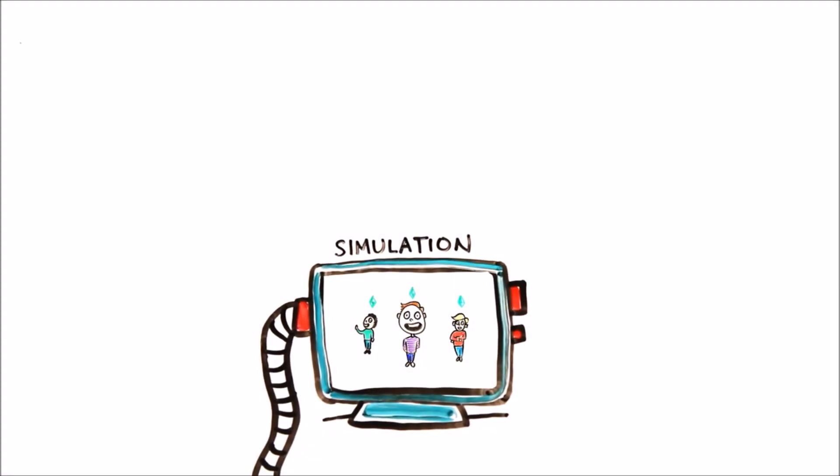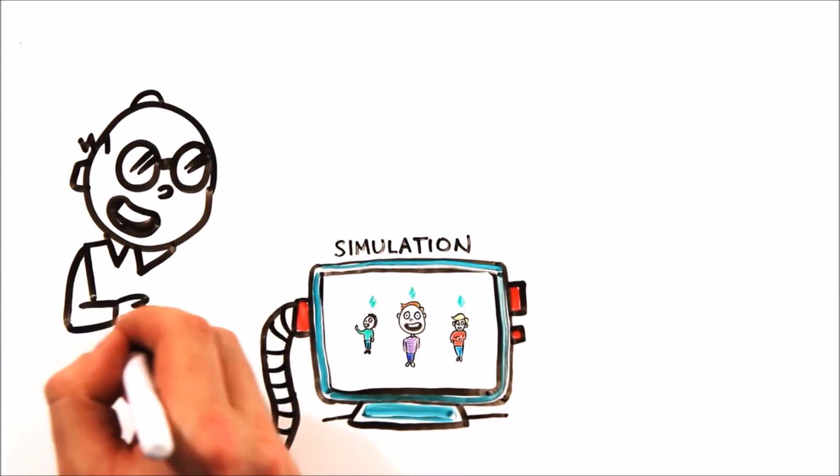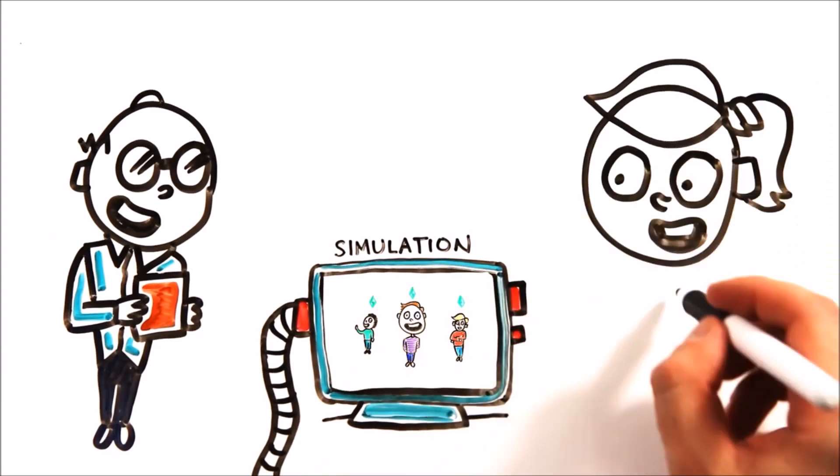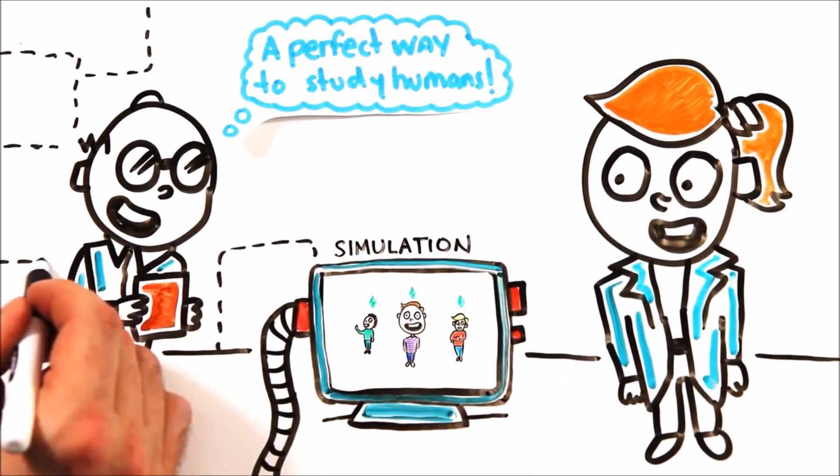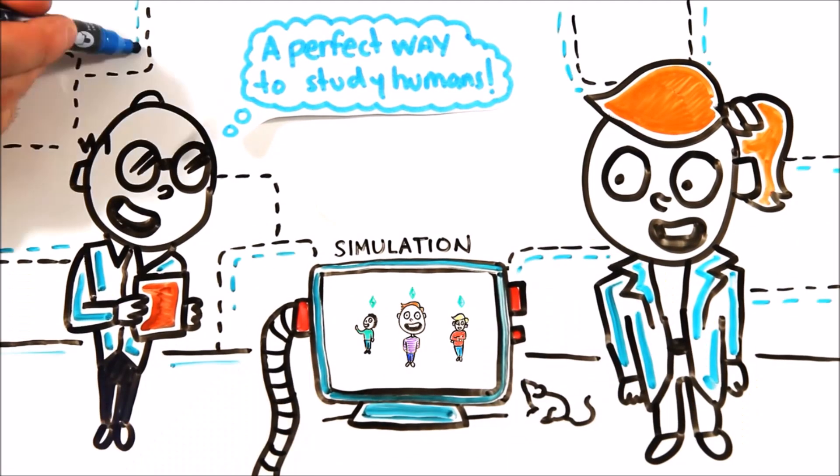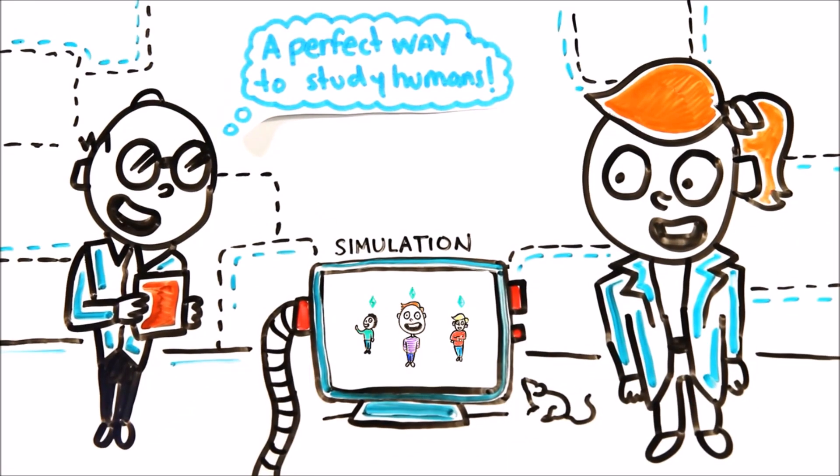As technology advances, it's almost a certainty that future humans will make extremely realistic human simulations based on the world that we live in to study these humans like we study mice. Scientists already use simulations to understand nature and human behavior, but in the future, it's possible that the human test subjects will be conscious and think they're real. So we can give this scenario a fairly high probability.